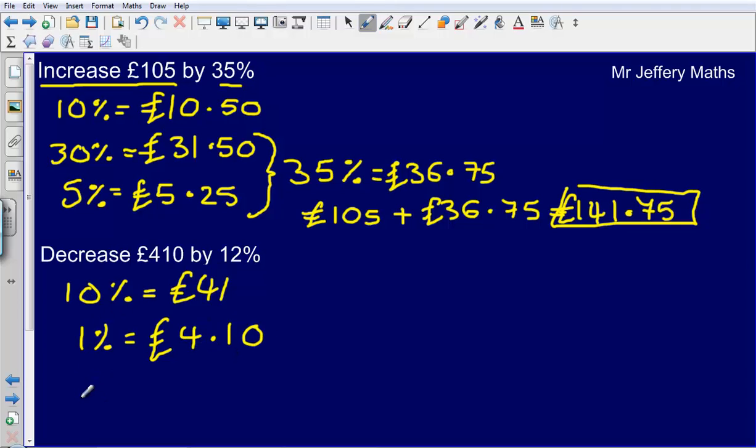Now here I've only got 11% so far and I need 12%, so I'm going to add another percent on. Now I can see that I've got 10%, 1%, and 1%, which is the same as 12%. So 12% will be £41 plus £4.10 plus £4.10, which gives me £49.20.